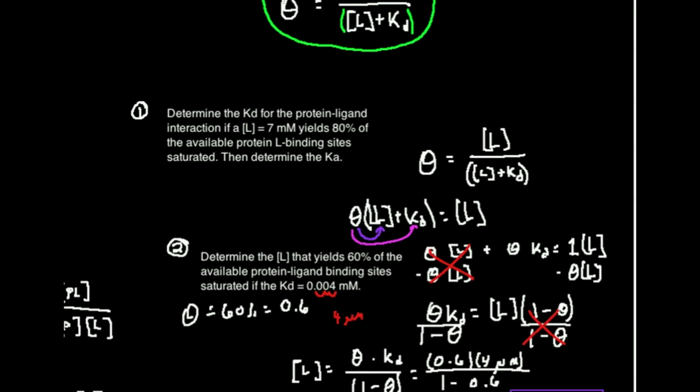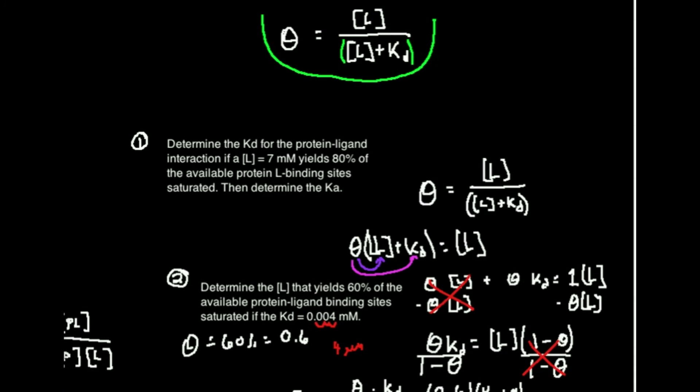And in the next video we're going to go over something that's a little bit different, and it's actually called a hill plot. And that's actually for determining something called cooperativity, but it's going to use an equation that's actually very similar to this, but it's actually going to have some exponential terms. So make sure to like this video and subscribe to the channel for future videos and notifications. Thank you very much.